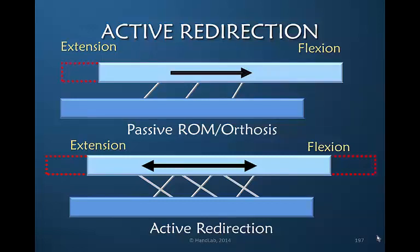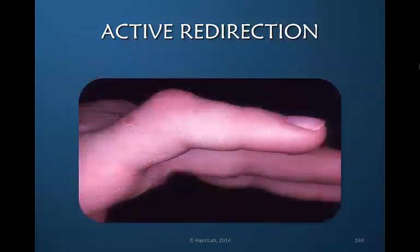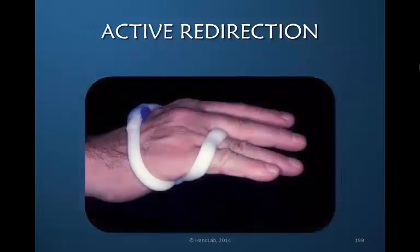Not to be ignored is the fact that active redirection is engaging the motor cortex. A classic example is the PIP flexion contracture where we always see the MP joint hyperextended. We know from clinical experience that a patient with ulnar palsy who has developed PIP flexion contractures of the ring and little finger is able to resolve those contractures with the use of an anti-claw orthosis that blocks the MP joint and drives all the motion into the dorsal apparatus for full IP joint extension. If we can resolve a flexion contracture in this patient, why can we not use the same technique to resolve flexion contractures in the PIP joint of all fingers?